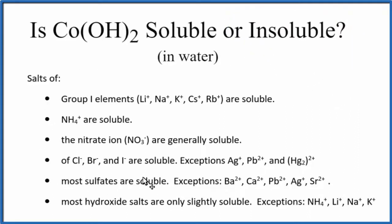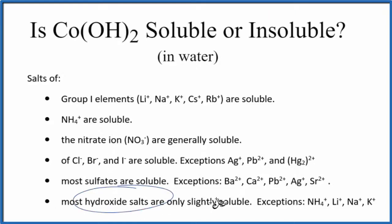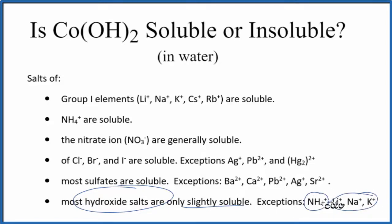When we look at these solubility rules here, this is a short list of the more important solubility rules. Going down, it says most hydroxide salts are only slightly soluble, with a few exceptions — these are all in group 1, plus the ammonium ion, which is very soluble. So hydroxide salts like cobalt-2-hydroxide are slightly soluble — just a little bit dissolves, almost insoluble.